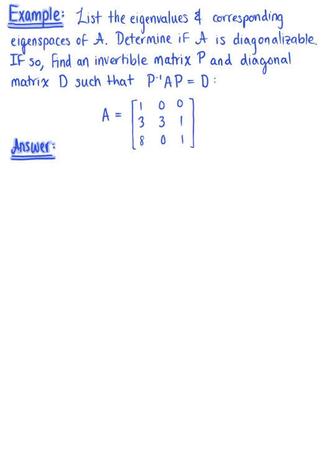For the given matrix A, list the eigenvalues and corresponding eigenspaces of A. Determine if A is diagonalizable, and if it is, find an invertible matrix P and diagonal matrix D such that the inverse of P times A times P equals matrix D.